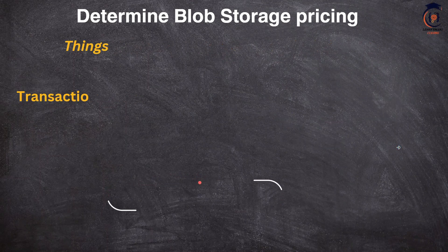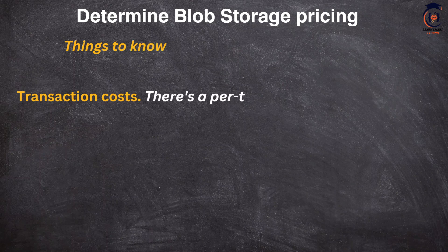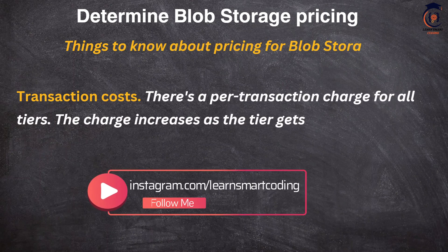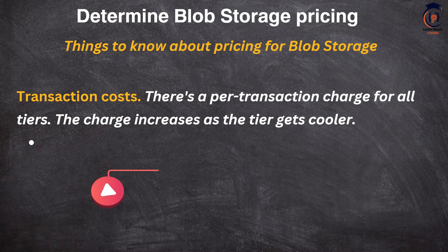The third factor is transaction cost. There is a per-transaction charge for all tiers, and the charge increases as the tier gets cooler — meaning the more transactions you perform on data in cool, cold, or archive tiers, the higher the cost.